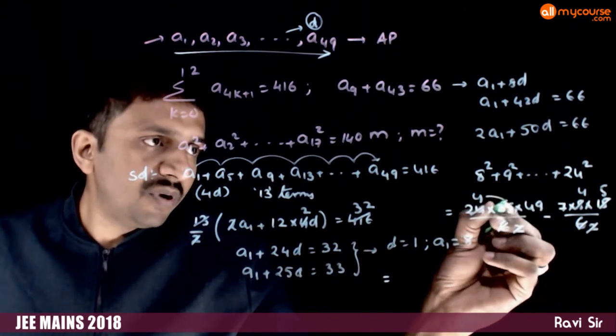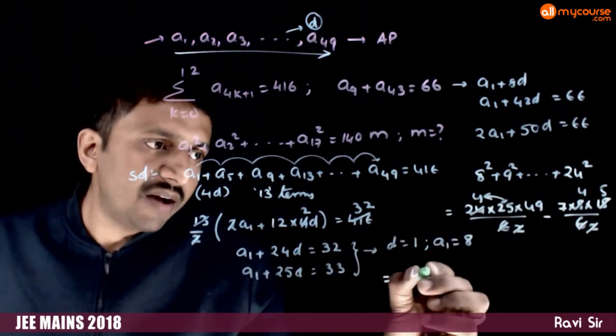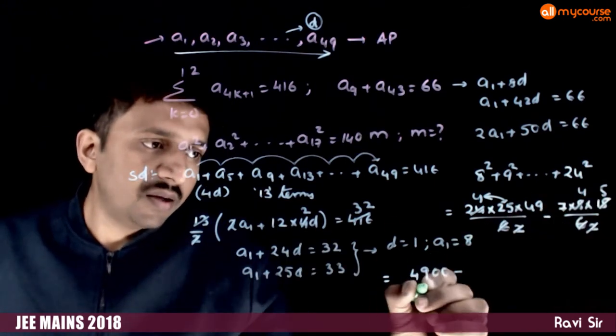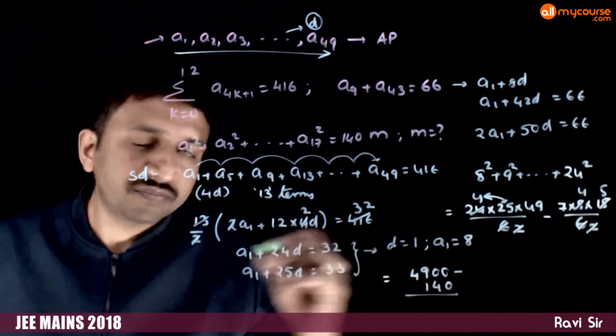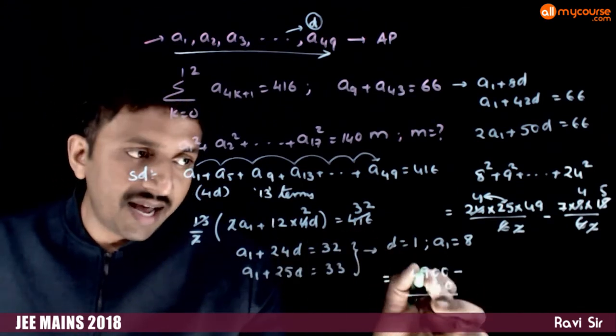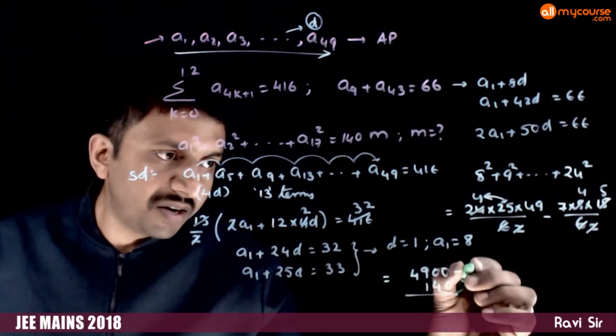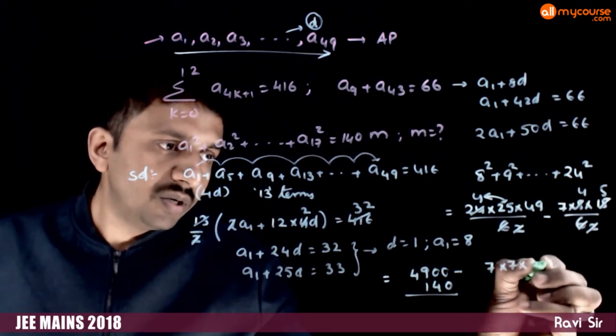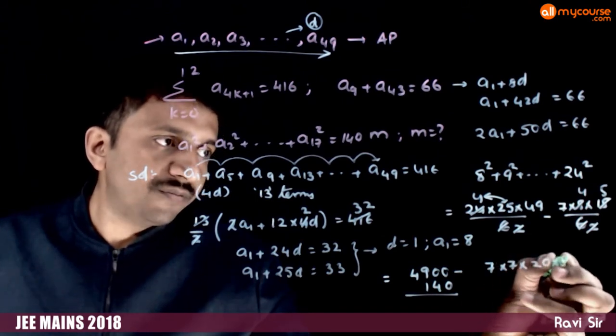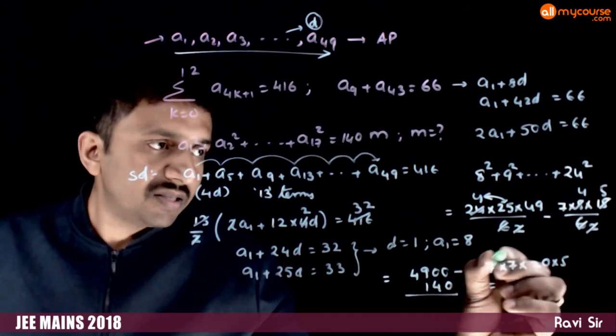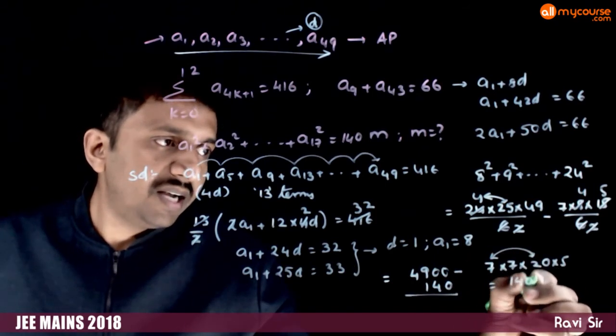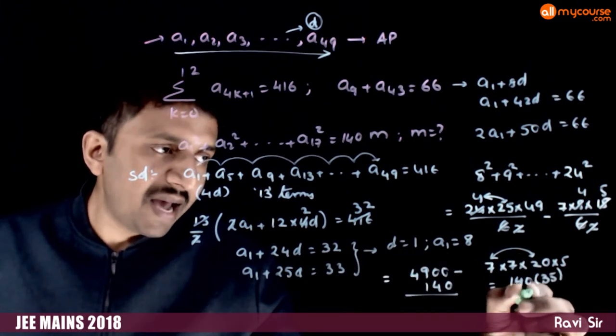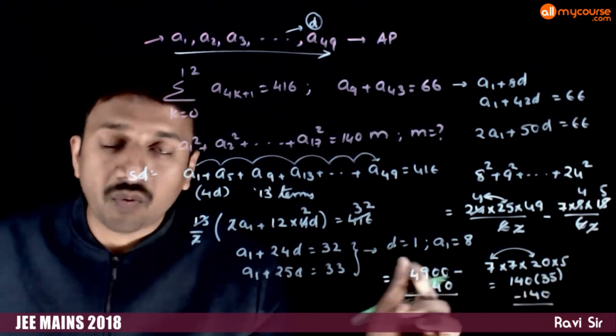24 into 5 is 100, so we have 4900 minus, this is 7 times 2 is 14 into 10, 140. So, 4900 minus 140. 4900 can be written as 7 into 7 into 20 into 5. That is 140 times 35. This is 140 times 35 minus 140. So we get 140 times 34.